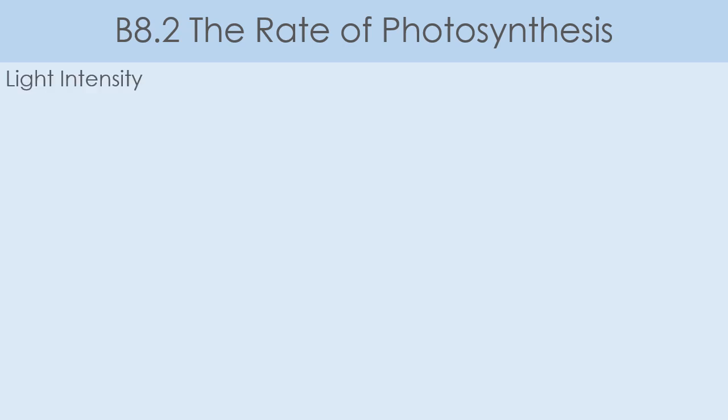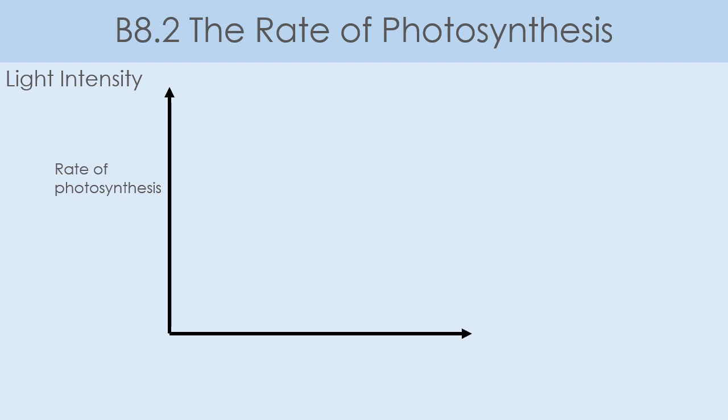First, we're going to look at light intensity — how strong or weak the light is. To do this we're going to draw a graph showing the rate of photosynthesis. On the Y axis, the one going up, we've got our dependent variable: the rate of photosynthesis — how fast it is happening. This is what we are measuring. On the X axis we have what we are changing, our independent variable, which is light intensity. We're just using arbitrary units for it at the moment.